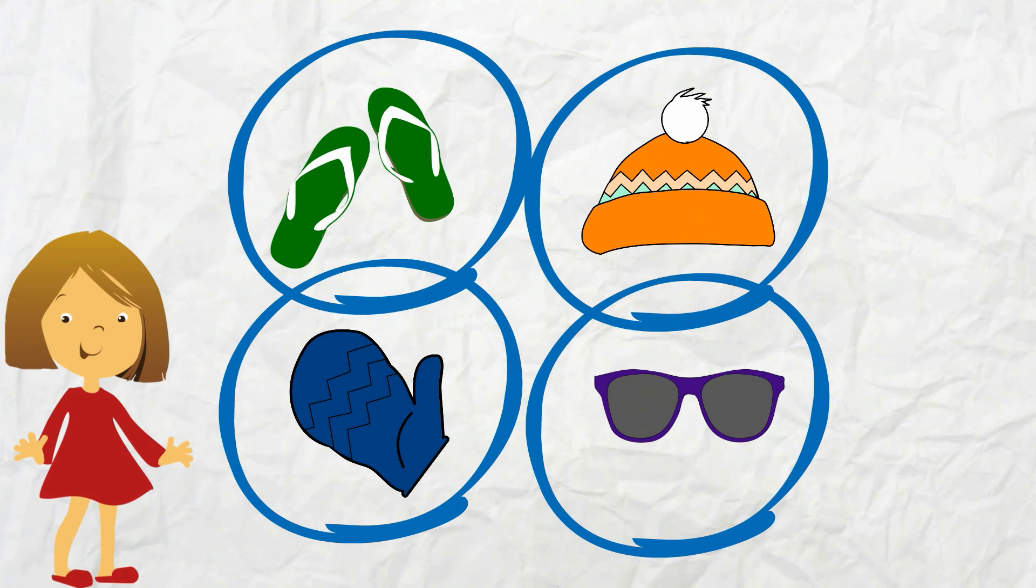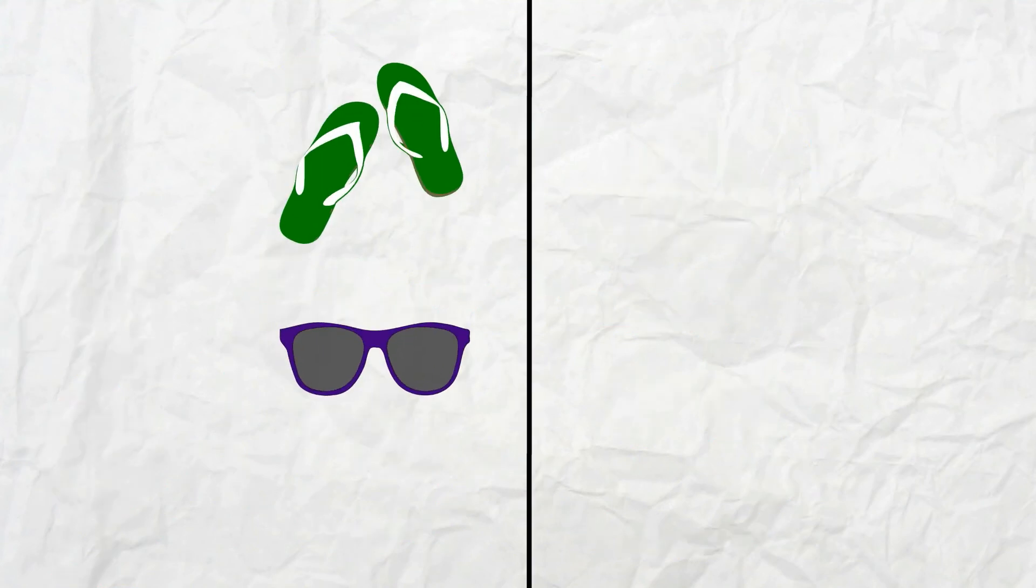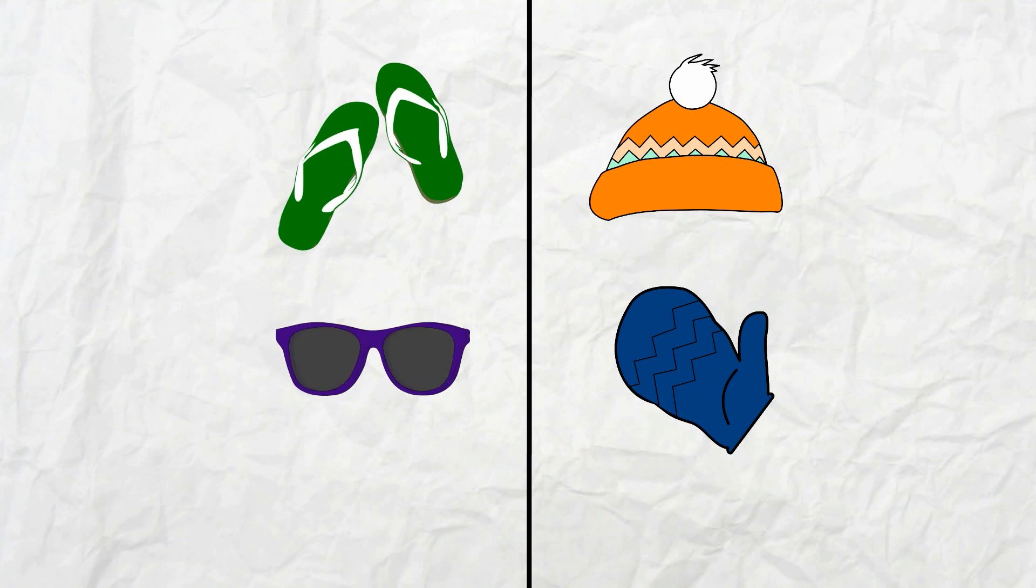I can sort these items into two different groups. A summer clothes group, and a winter clothes group. You wear sandals and sunglasses in the summer, and you wear hats and mittens in the winter.